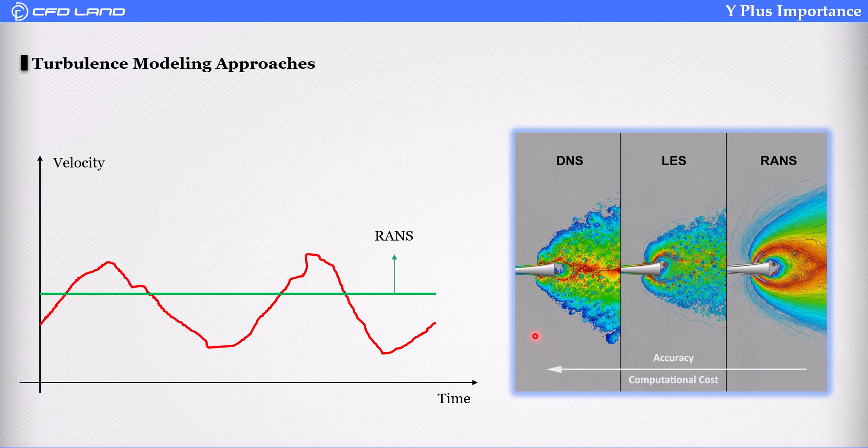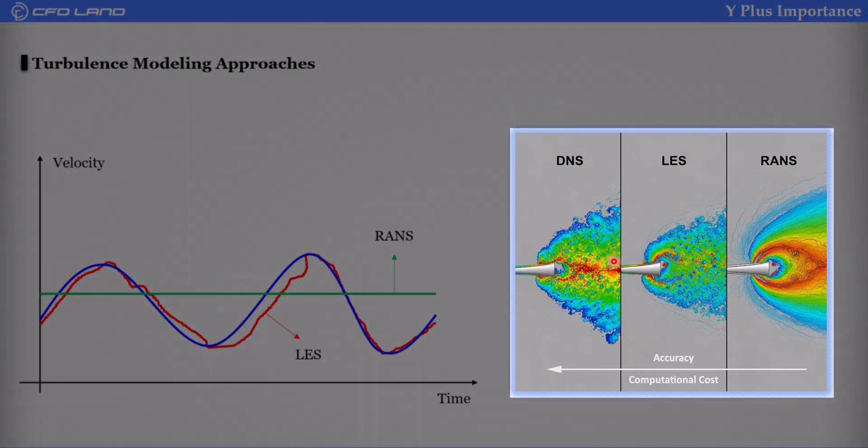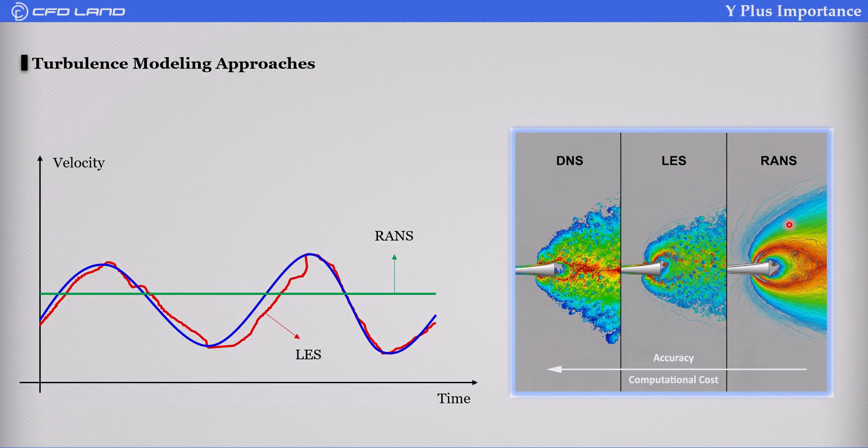And then we have DNS. In DNS, you resolve all eddies. All of them. You can capture all of them. So as it seems, it's very accurate. You can see in the picture. While RANS is the least accurate one. But computational cost for DNS is high. While for RANS, not so much.